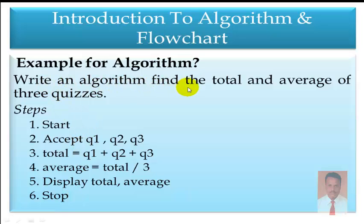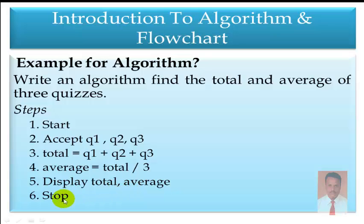Now write an algorithm to find the total and average of three quizzes. We will call them Q1, Q2, and Q3. Step 1: Start. Step 2: Accept Q1, Q2, and Q3. Step 3: Calculate total — Total = Q1 + Q2 + Q3. Step 4: Calculate average — Average = Total / 3. Step 5: Display the total and average to the user. Step 6: Stop.